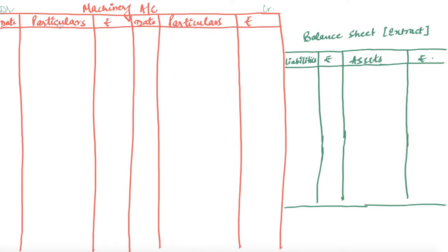Here I have prepared the format. The red one is your machinery account, where we are required to show the depreciation and the treatment of each machinery separately. In the balance sheet we are required to show only the final balance of the machinery — the purchase amount minus the accumulated depreciation. In the machinery account we show the balances year after year. The asset column is made a little wider than the liabilities column since there is no significant use of liabilities in this question.